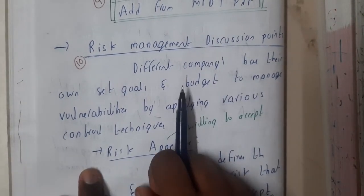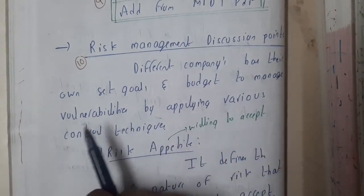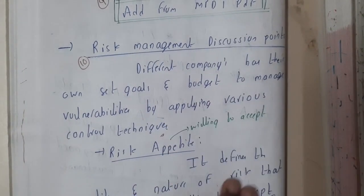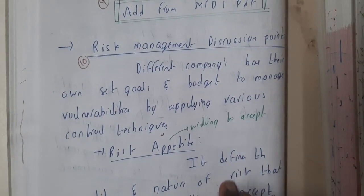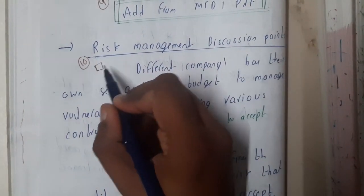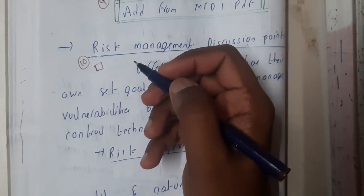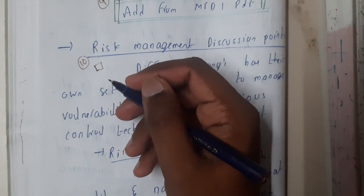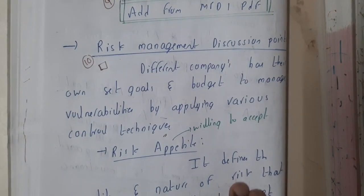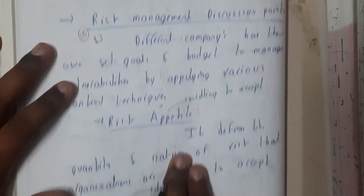Different companies have their own goals and budgets to manage vulnerability by applying various control strategies. If you take a project from a large company, they will give you thousands of dollars. But if you go to a small company and ask them to pay thousands of dollars, they won't, because their budget is not that high.